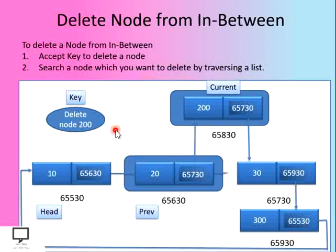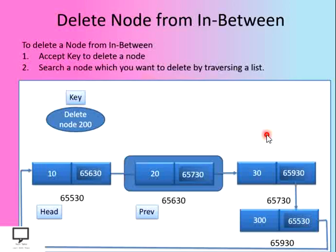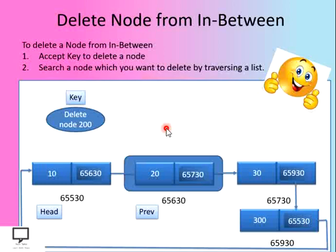The current node equals the key node. The address in the next field of the previous node will now hold the address of the next field of the current node. So this address — 657300 — will get updated at that position, forming a logical link between the previous and the next node, and we remove the link to the current node. After that, we delete this particular node and we are done with the deletion of the node from in between. Now we have four nodes remaining.